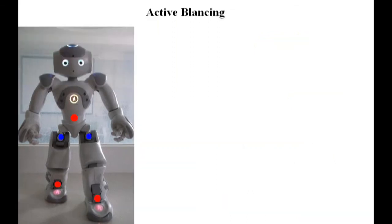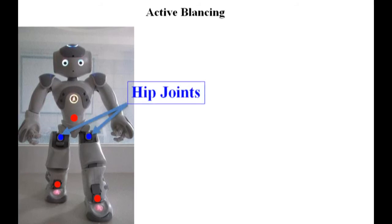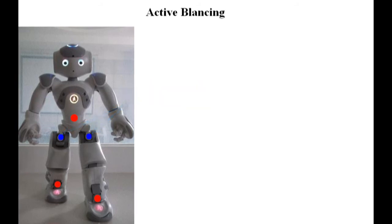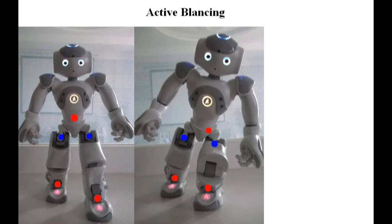Besides this, an additional active balancing strategy is applied to help the robot switch its supporting patterns. When lifting one leg, the projection of center of mass is first adjusted to lie inside the expected supporting foot. And then the center of mass is lifted vertically.